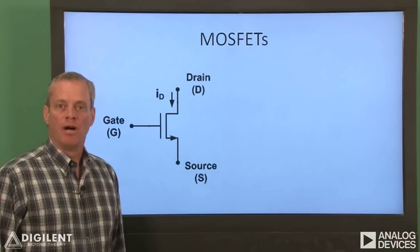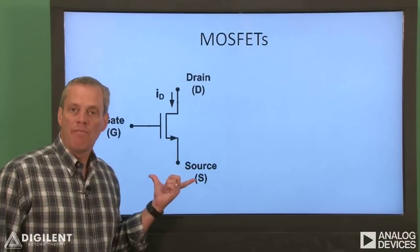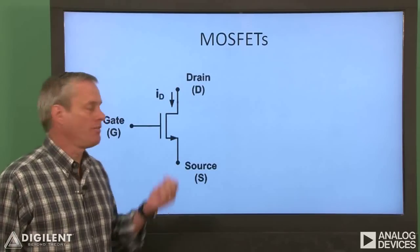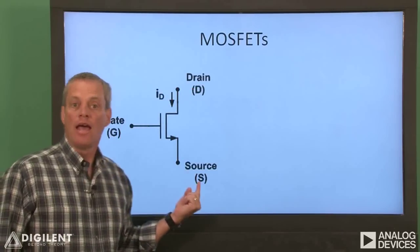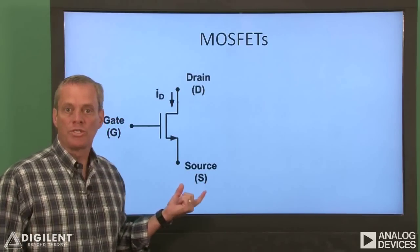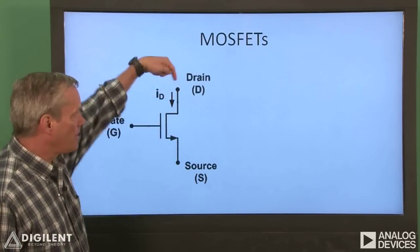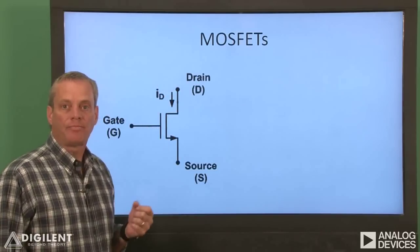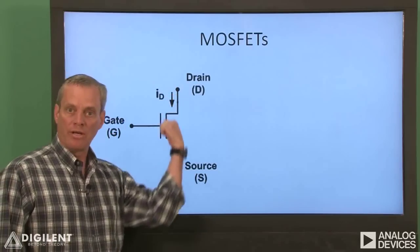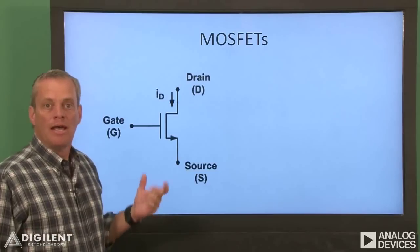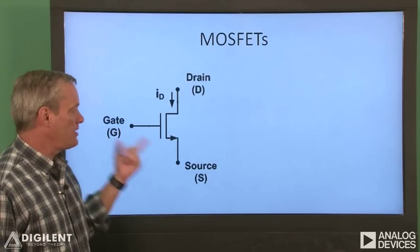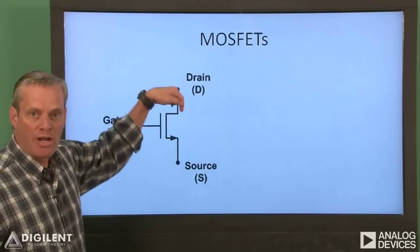The first type of transistor we'll talk about is a MOSFET. This is a circuit schematic symbol of a MOSFET. MOSFETs are three terminal devices. The terminals are called the drain, the gate, and the source. Roughly speaking, the voltage applied between the gate and the source controls the amount of current coming through the drain, I sub D. Increasing the gate voltage allows more current going through the drain and out the source. Thus, the MOSFET is typically modeled as a voltage-controlled current source, with the gate-to-source voltage controlling the drain current.